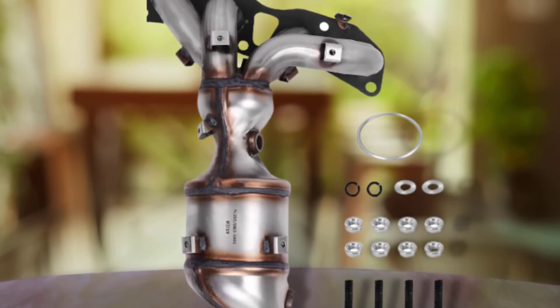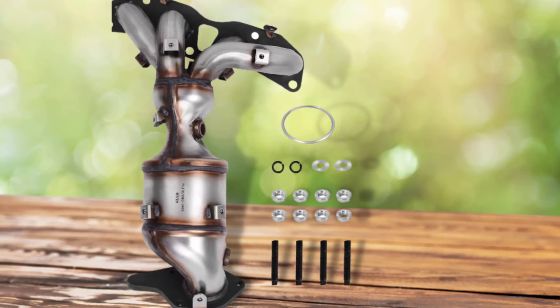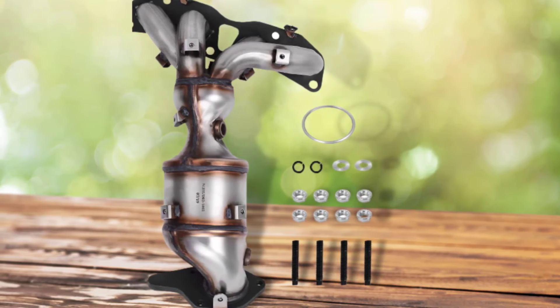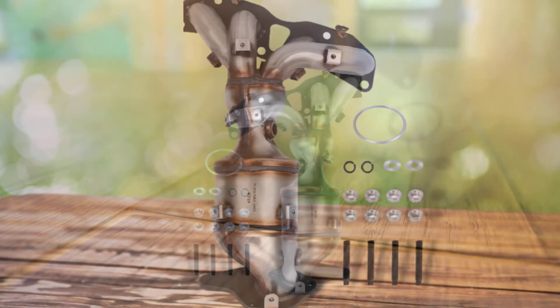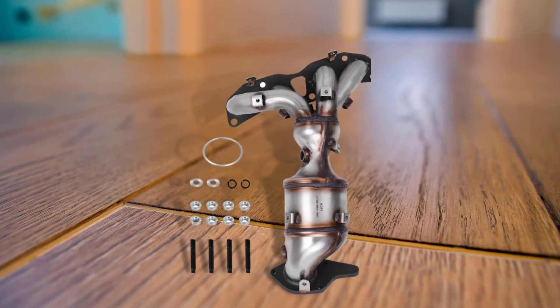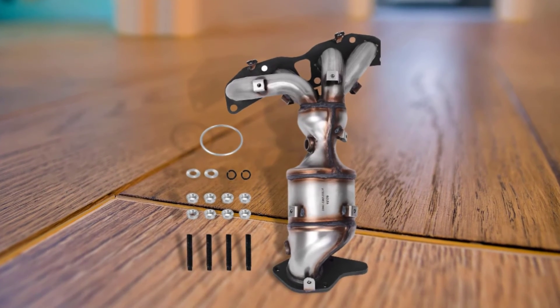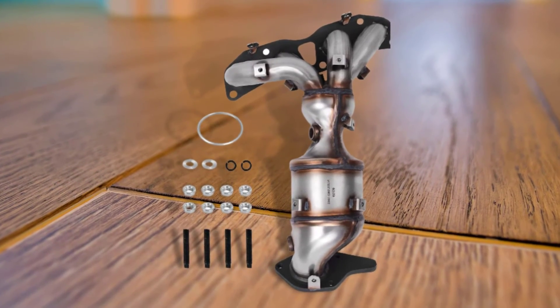This direct-fit cat, however, may take a while to install. This is because removing the stock catalytic converter requires you to move a few things out of the way from the topside before you can easily access the bolts. The new cat doesn't come with the bottom studs, so you have to recycle the ones from the old cat or buy new ones.